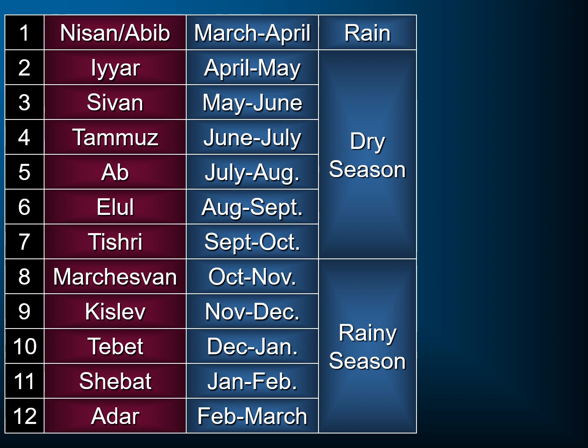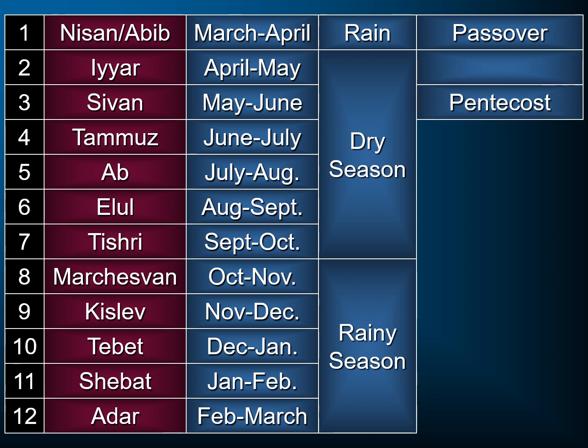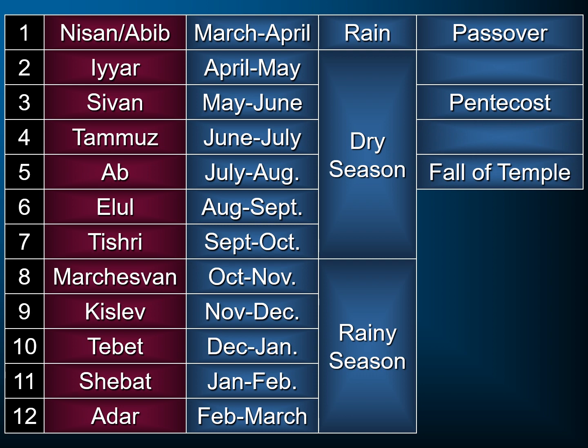So the months are set up with Nisan as the first month — that's when the Passover would be, along with the Feast of Unleavened Bread and the Feast of Firstfruits. Then 50 days later, you would have Pentecost, so that's roughly around the third month, because Passover actually takes place on the 14th day of that first month — halfway through the month. Pentecost would still be in the complete dry season, with Passover right at the end of the rainy season, so it's usually pretty dry by then as well.